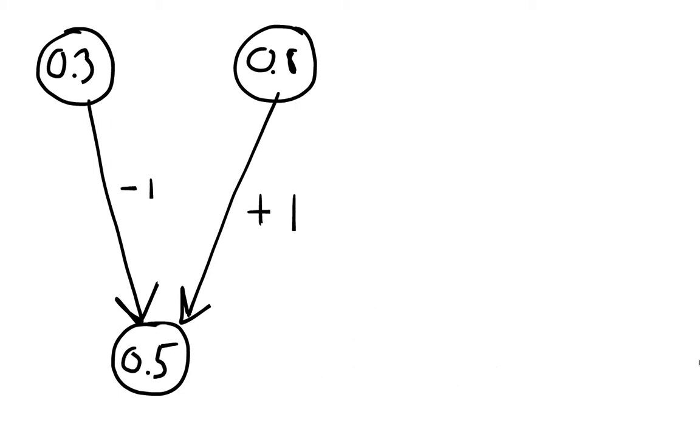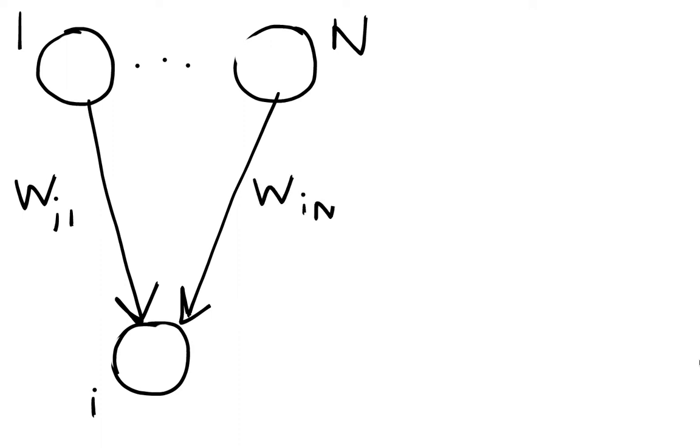Now imagine we have a total of N neurons influencing our internal neuron, which we'll call neuron i. We represent the weight of influence of neuron 1 on neuron i as W_i1, and the weight of neuron N on neuron i as W_iN.